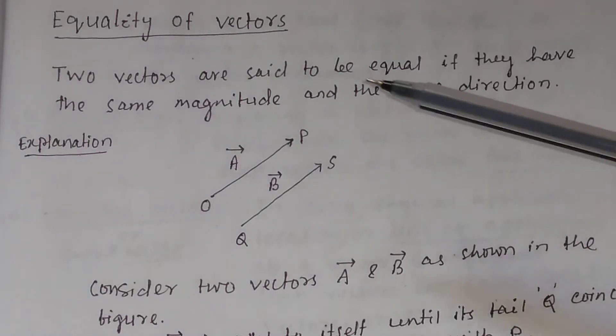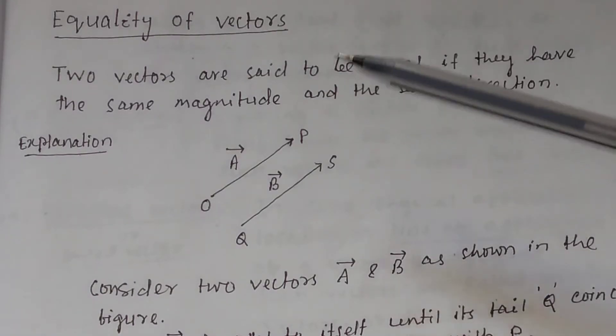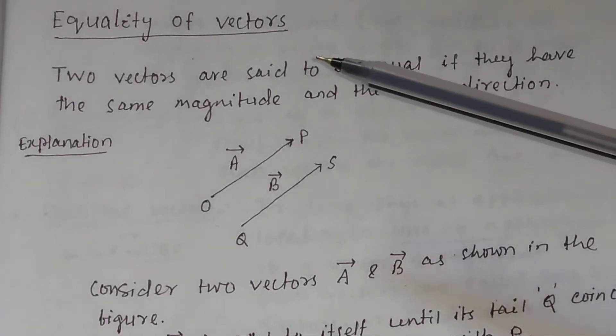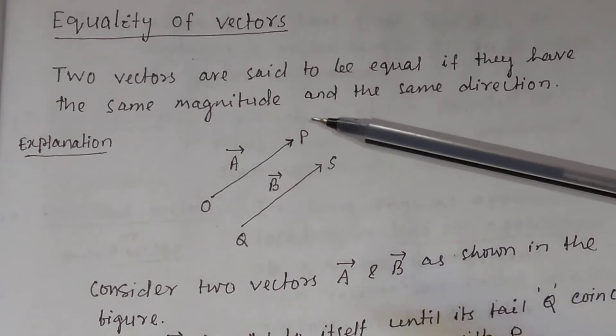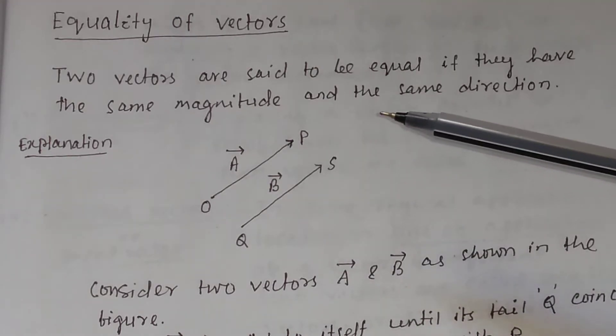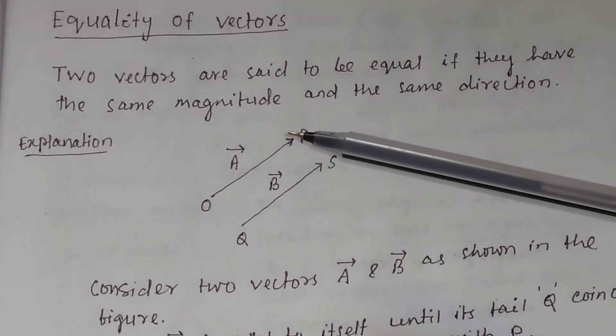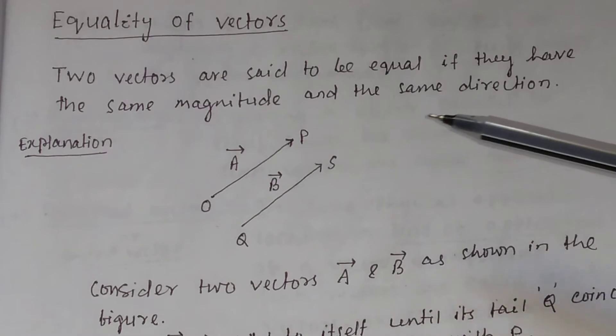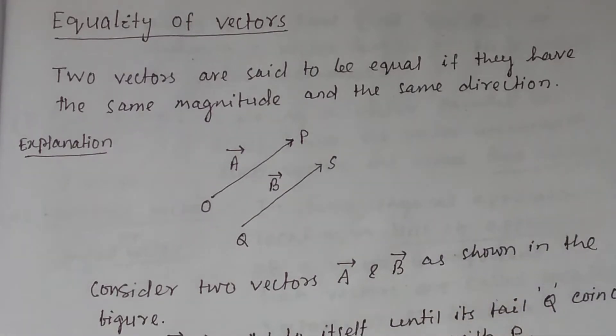In this video, we will discuss about equality of vectors. Two vectors are said to be equal if they have the same magnitude and the same direction.